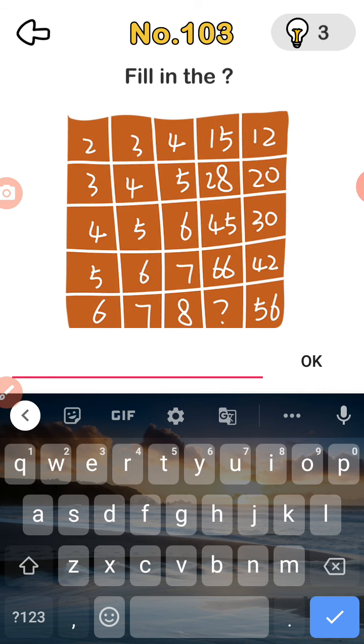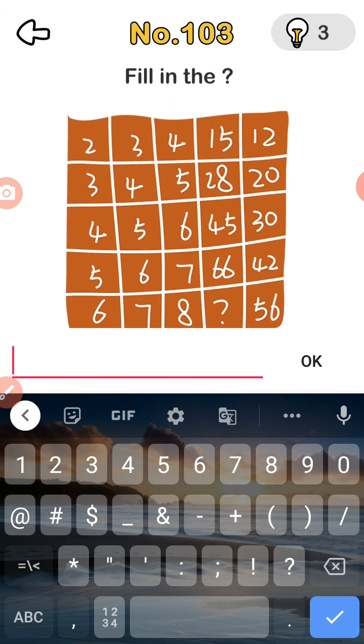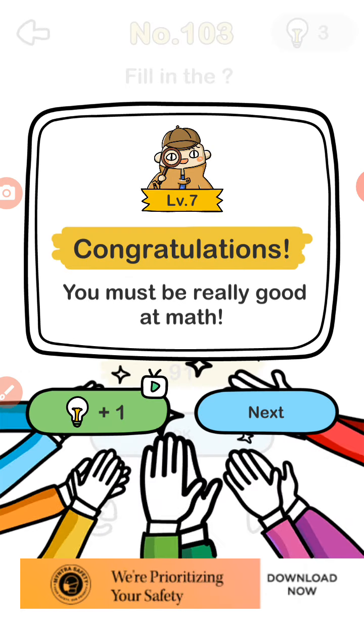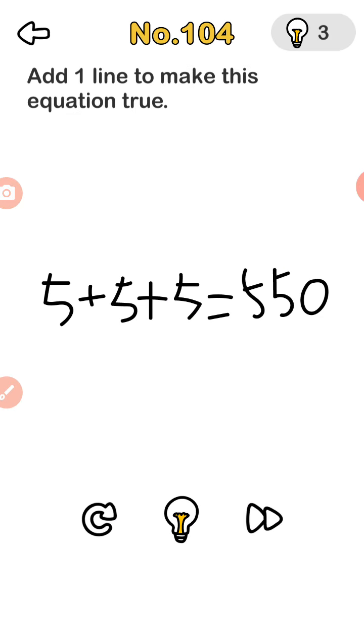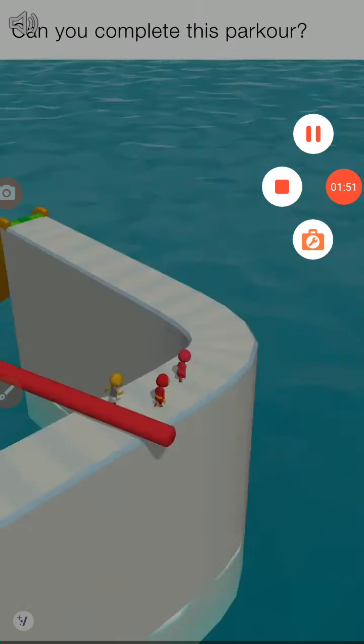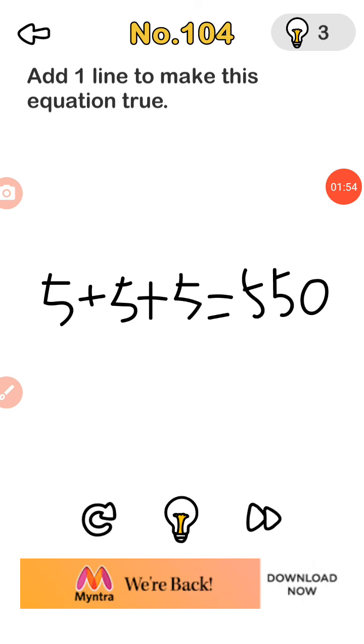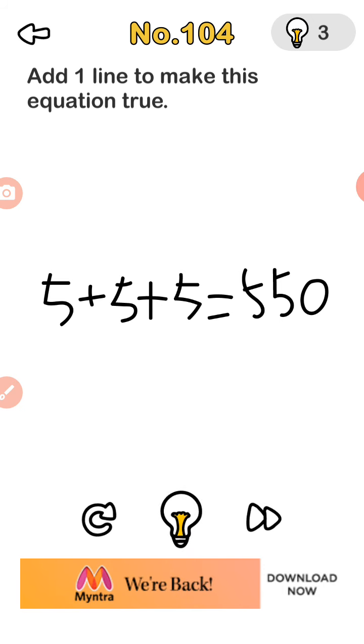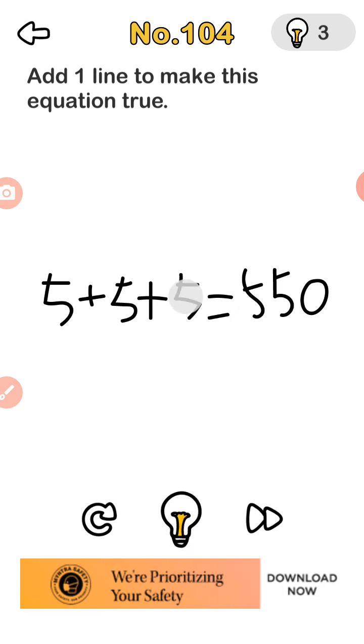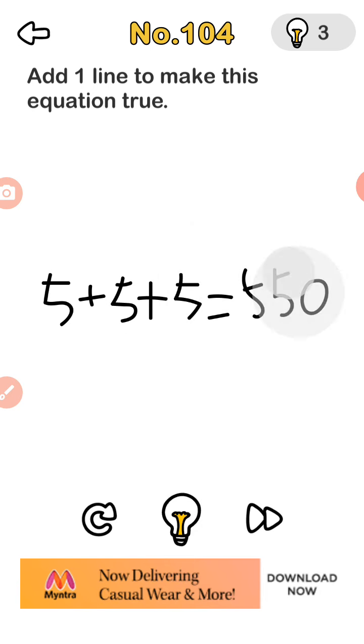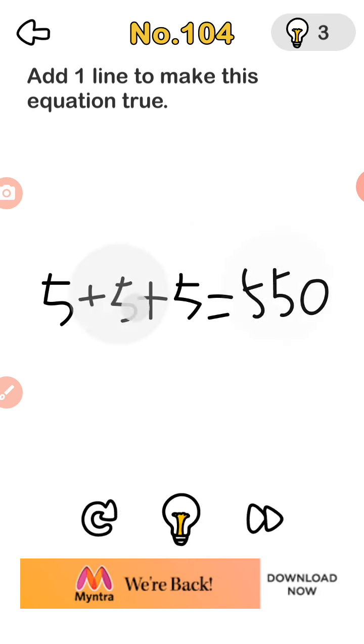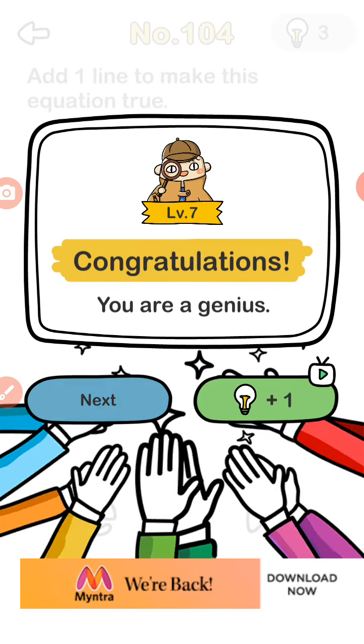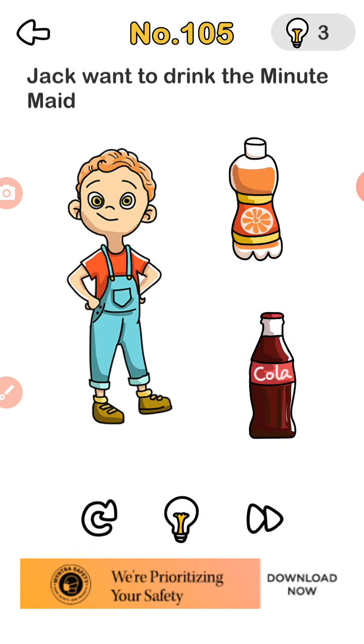Yeah guys my phone is acting up now, I don't know why. You must be really good at math guys. Okay, add one line to make this equation. You are genius, what I didn't do anything. Jack wants to drink the Minute Maid.